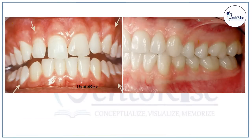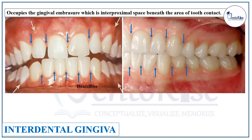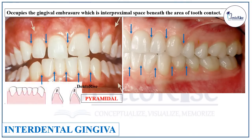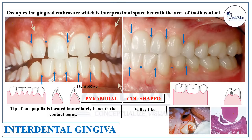The last type of gingiva is the interdental gingiva. As the name suggests, it is present between two teeth and occupies the gingival embrasure with its interproximal space beneath the area of tooth contact. In the anterior region, the interdental gingiva is pyramidal in shape, with the tip of one papilla located immediately beneath the contact point. In the posterior region, the interdental gingiva is col-shaped — a valley-like depression that connects the facial and lingual papilla.